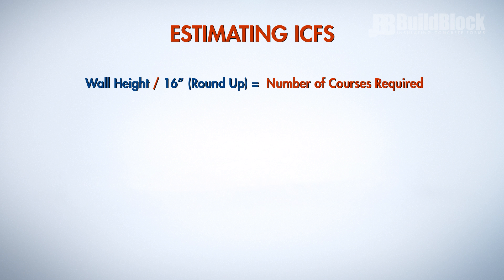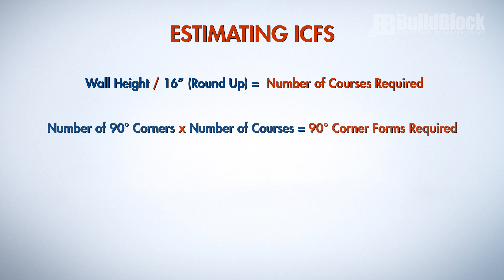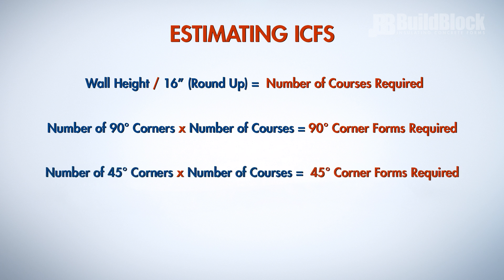To get the number of 90 degree corner forms required, multiply the number of 90 degree corners in the structure by the number of courses required in Step 1. The same goes for any 45 degree corners — multiply the number of 45 degree corners in the structure by the number of courses required in Step 1.